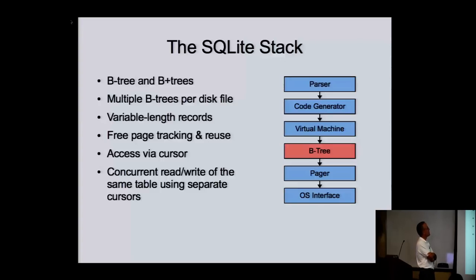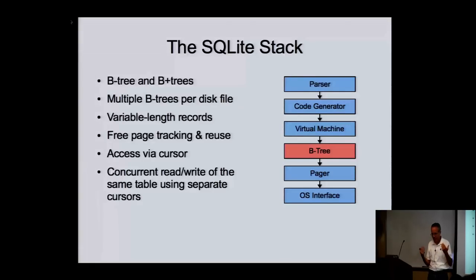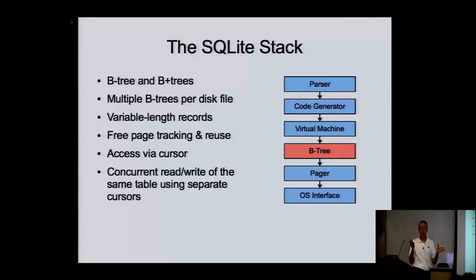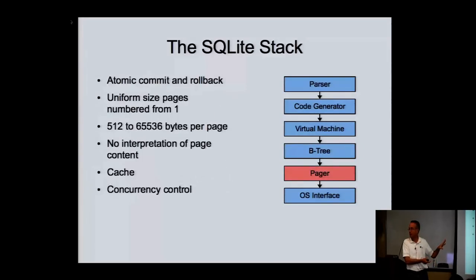The B-tree layer supports B-trees and B-plus trees, with multiple B-trees per disk file — one B-tree for each table, one for each index. Variable-length records use a very efficient coding mechanism. It's accessed via cursor: you open a cursor into a B-tree, seek it, and advance it backwards and forwards. It allows multiple cursors to be open on the same B-tree at the same time, including cursors that are changing the B-tree. This is just the 30,000 foot view — I'll go back over all of this in more depth.